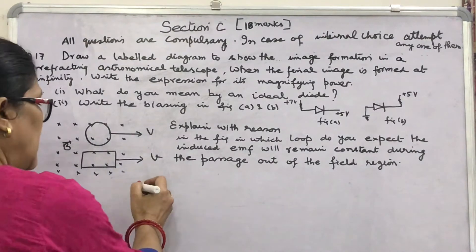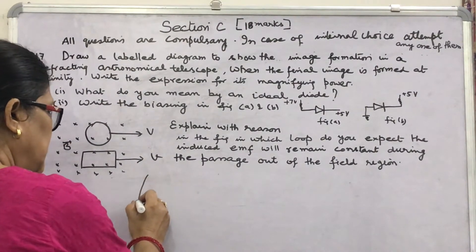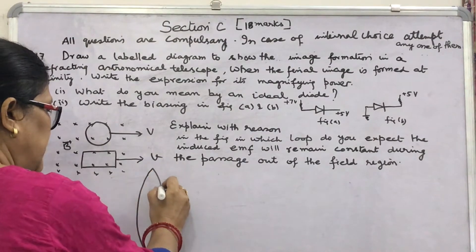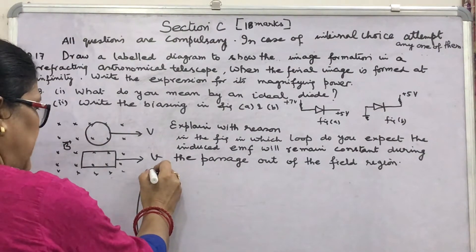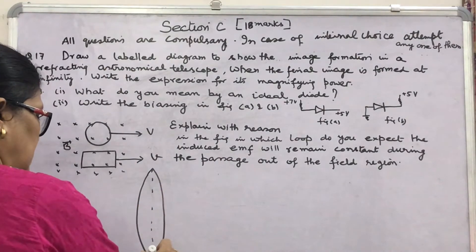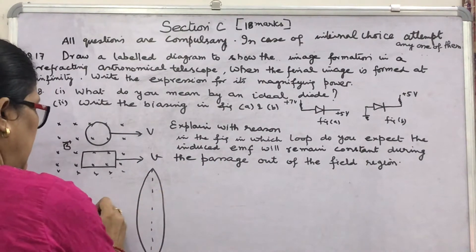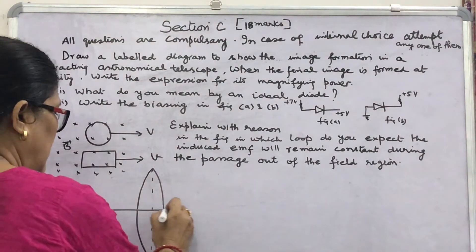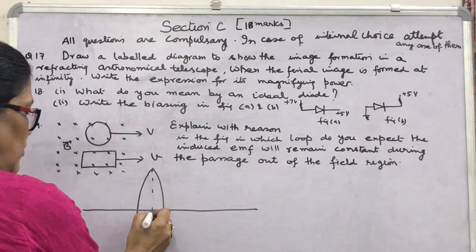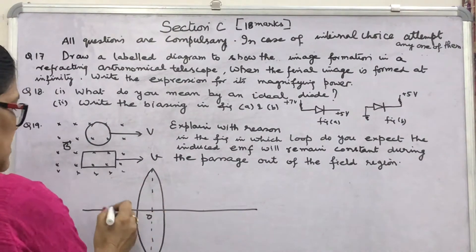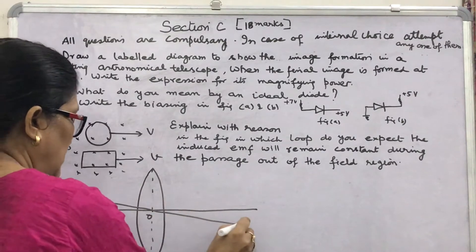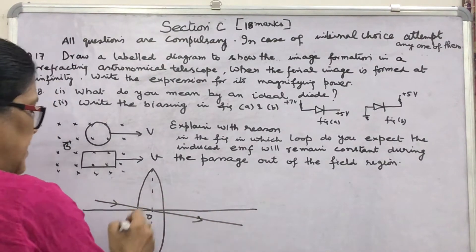In the telescope, it is used to see distant objects, so the objective lens of the telescope is of larger diameter so that it can collect a large number of rays coming from infinity. I have drawn the objective lens — this is the optical centre of the lens. One ray is taken passing through the optical centre; it remains undeviated.